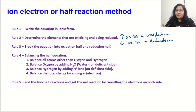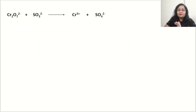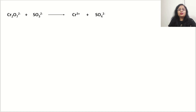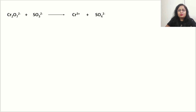It seems complicated, but when we do an example it will be very easy. The example is: Cr2O7²⁻ plus SO3²⁻ gives Cr³⁺ plus SO4²⁻. The first step is to write the equation in ionic form. We can see the reaction is already in ionic form, so rule number 1 does not apply here. In 99% of cases you will get the reaction already in ionic form.